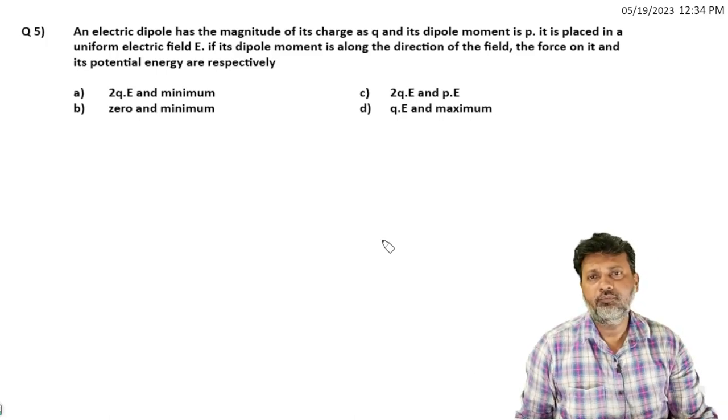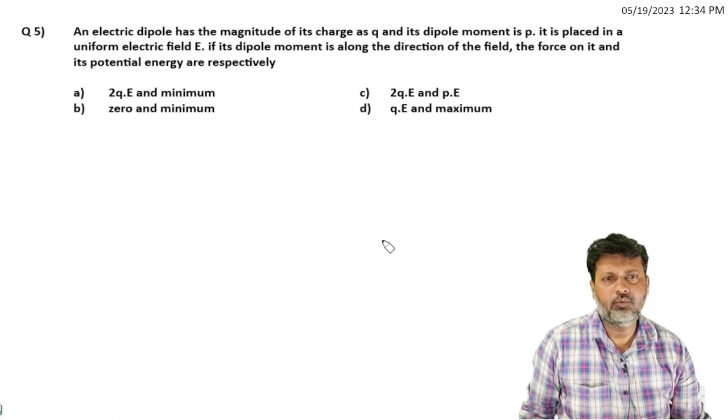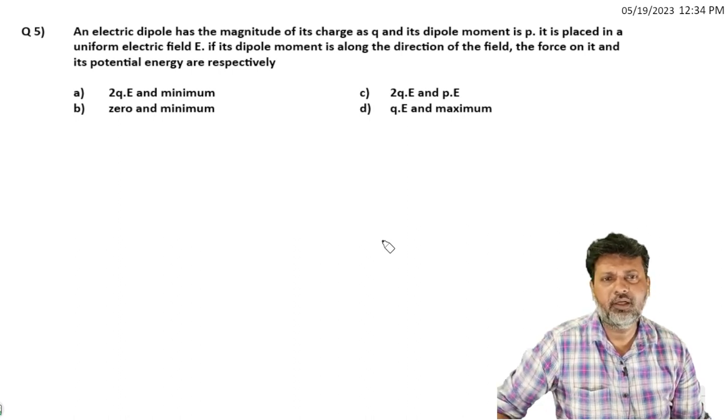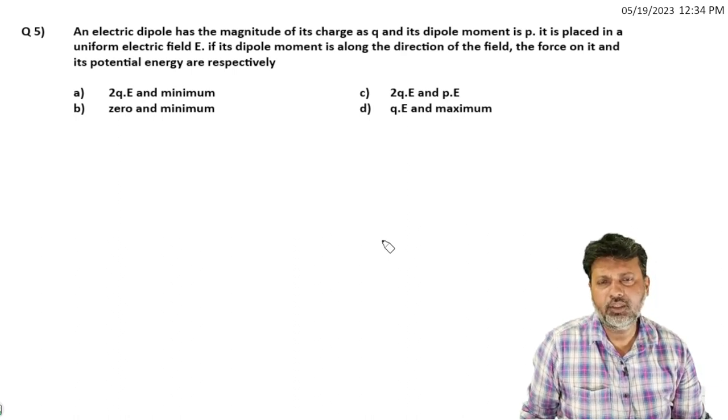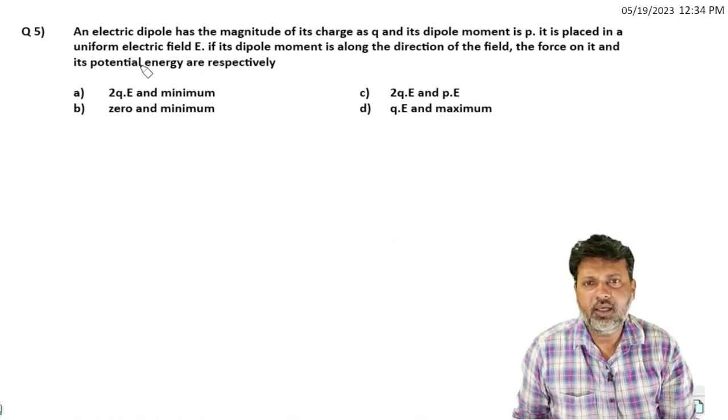Let's read the next question. An electric dipole has the magnitude of its charge as q and its dipole moment is small p. It is placed in a uniform electric field capital E. If its dipole moment is along the direction of field, the force on it and its potential energy are respectively.